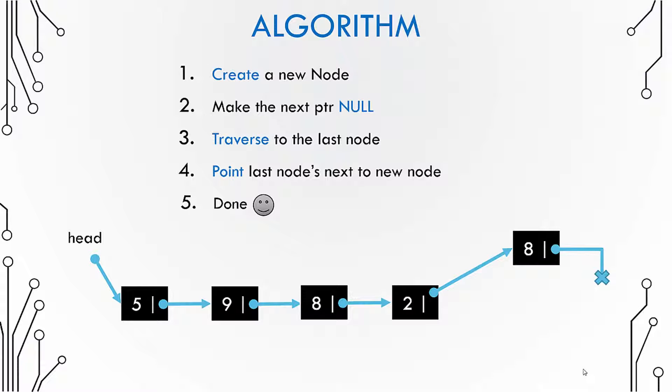Let me go through it again. The process is quite simple. You create a new node and because you want to append this node to the end of the list, you need to traverse to the last node. So you traverse to the last node and then point the last node's next pointer to the newly created node.